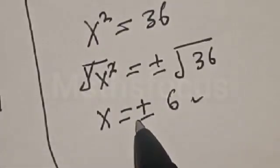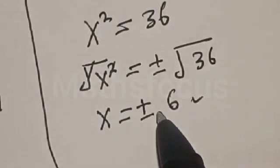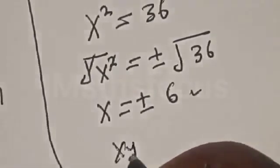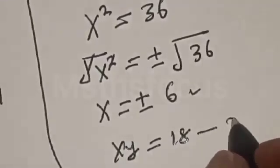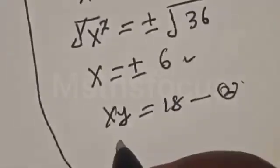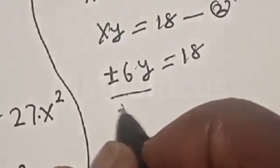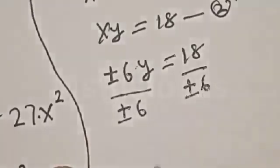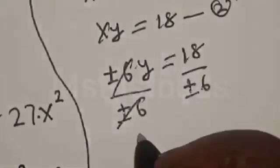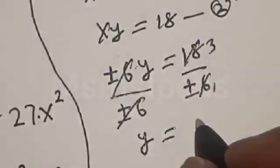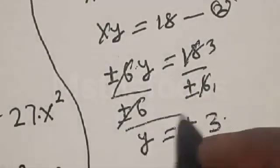Now let's substitute x into equation 2 to find the value of y. Equation 2 gives x·y equals 18. With x equal to plus or minus 6, we get plus or minus 6 times y equals 18. Dividing both sides by plus or minus 6, this cancels, giving y equals 18 divided by 6, so y is equal to plus or minus 3.